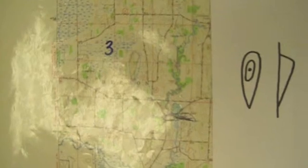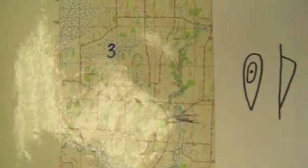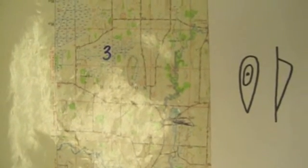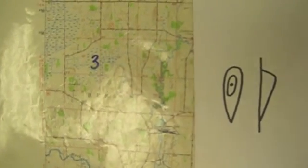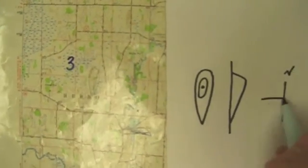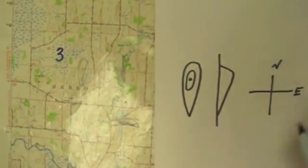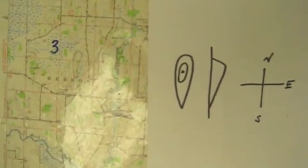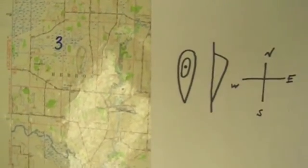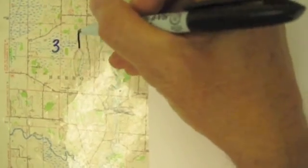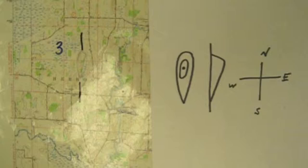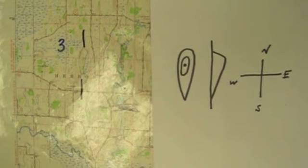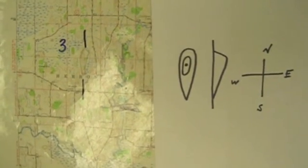So glacial deposition in origin. And the general compass direction — north is to the top of the map, east is over this way, south is at the bottom of the map, and west is over here. So this feature is mostly lined up in this compass direction, meaning the general compass direction or orientation of the feature would be to the north.